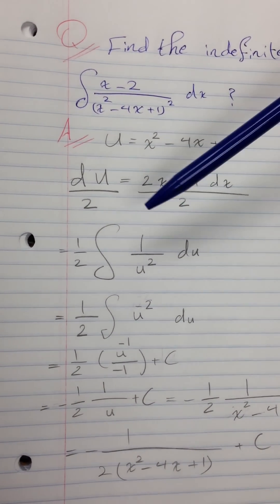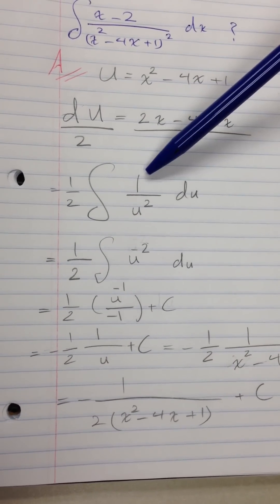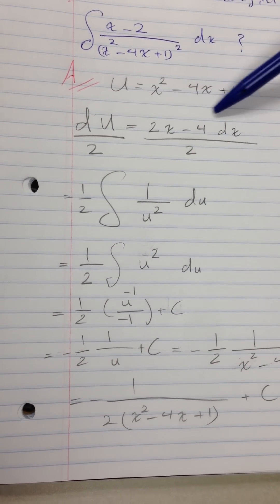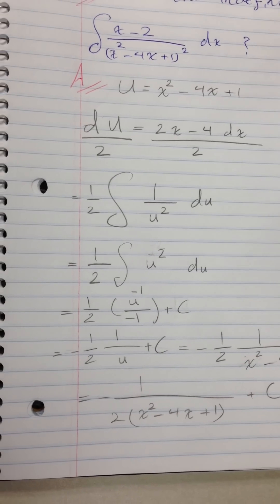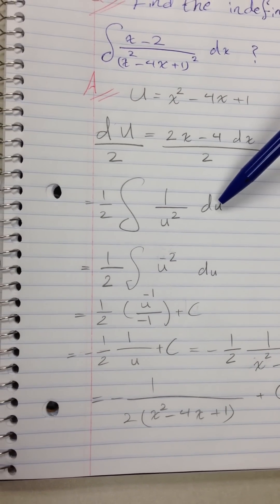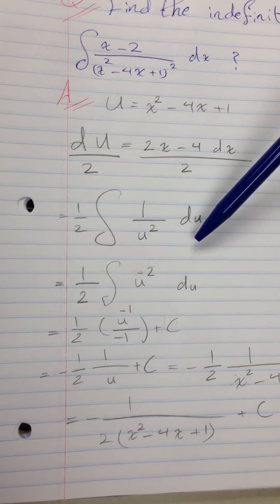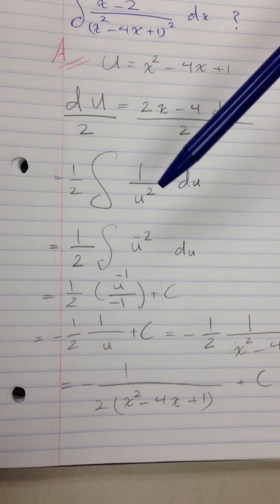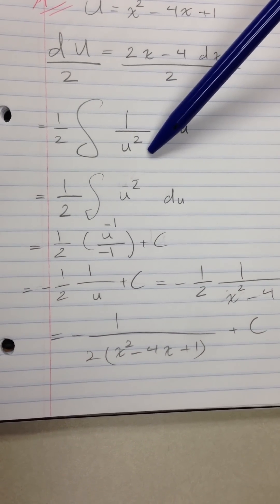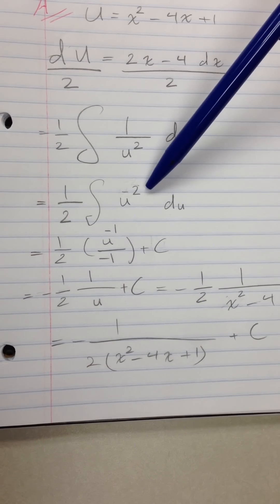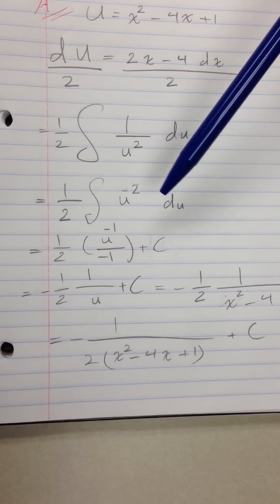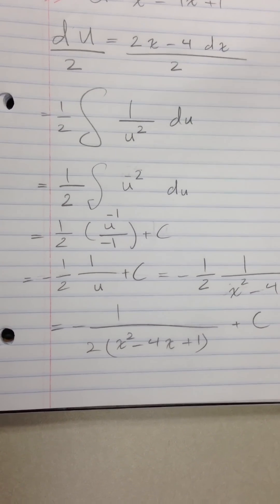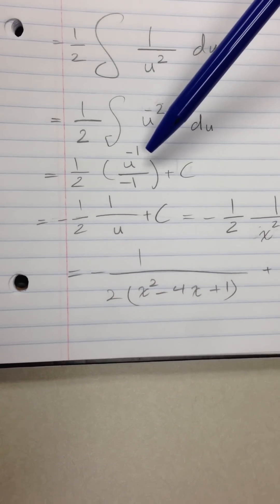The next step: we have 1 over u squared — u is the term raised to the power 2 in the denominator — multiplied by du over 2. We bring u squared to the numerator, so it becomes u to the negative 2, giving us (1/2) ∫ u⁻² du.